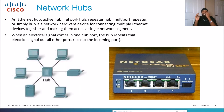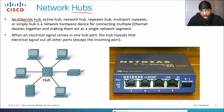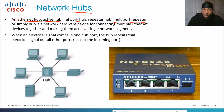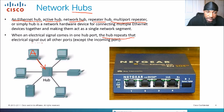Before talking about point-to-point links, we need to discuss hubs. An Ethernet hub — also called an active hub, repeater hub, multi-port repeater, or simply hub — is a network hardware device for connecting multiple Ethernet devices together, making them act as a single network segment. When an electrical signal comes into one hub port, the hub repeats that electrical signal out of all other ports except the incoming port.